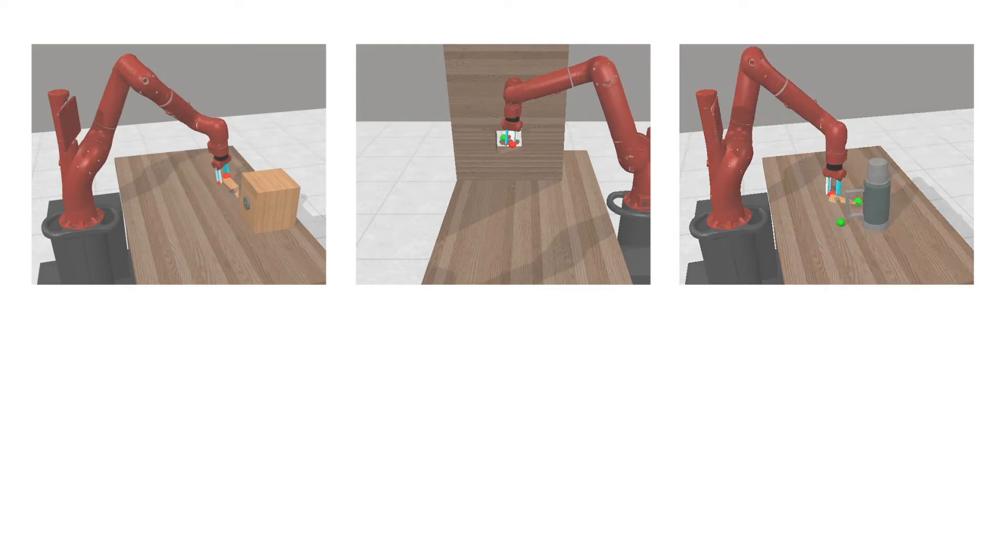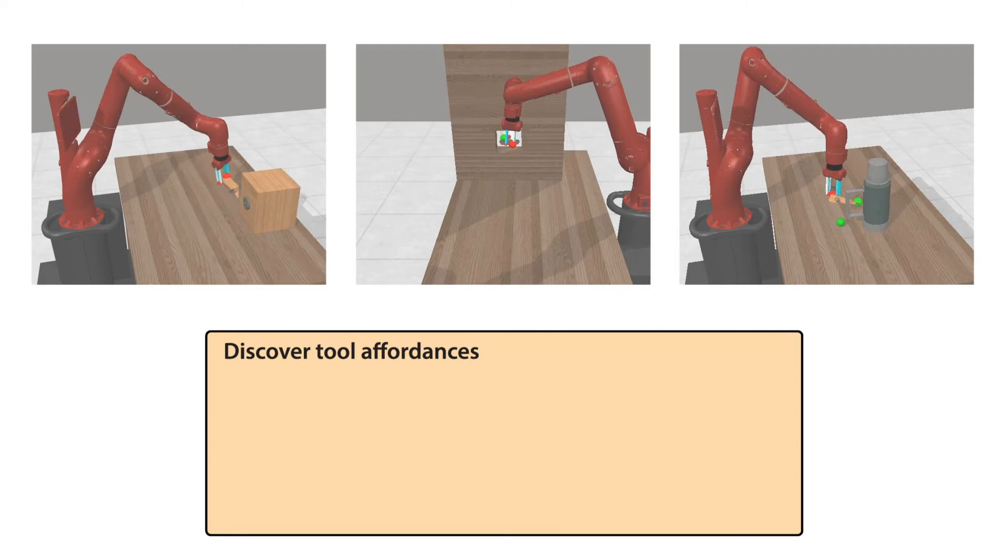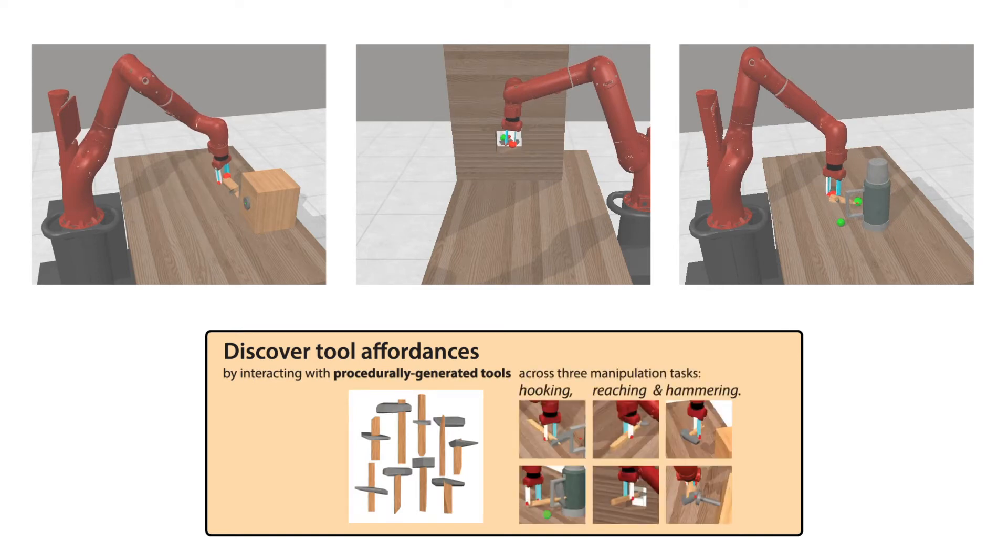In fact, each of these tools can be used in multiple ways. We present a framework for discovering ways of using tools, which we call tool affordances, from interaction experience with procedurally generated tools across three tasks: hooking, reaching, and hammering.